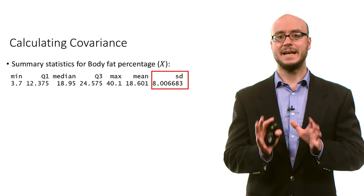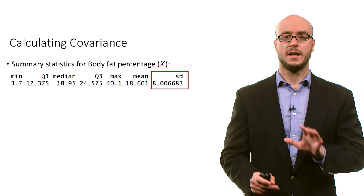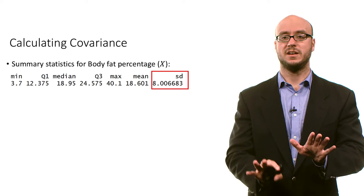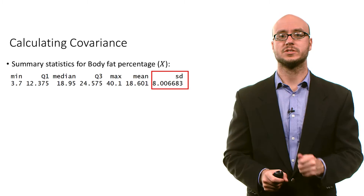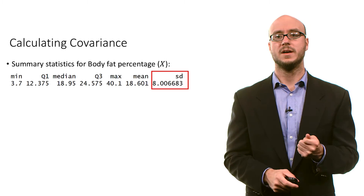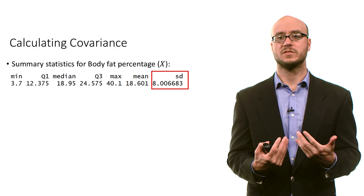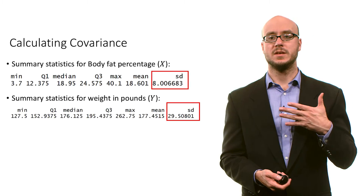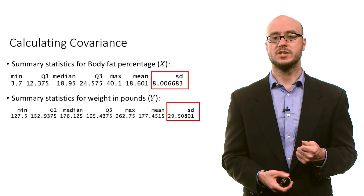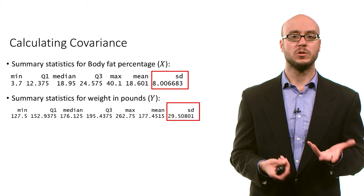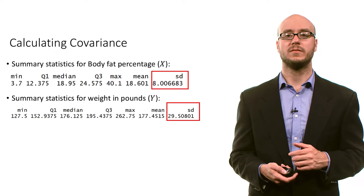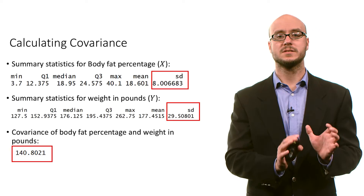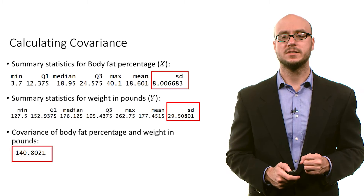So we can take a data set and use covariance and the standard deviation of x and standard deviation of y to calculate correlation. Here we have body fat percentage. The standard deviation for body fat percentage is 8. The standard deviation for weight in pounds is about 29.5, and the covariance is 140.80.